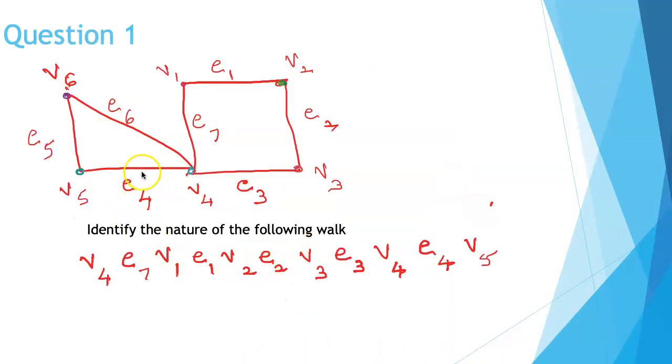Identify the nature of this walk. We have V4, E7, V1, E1, V2, E2, V3, E3, V4, E4, V5.